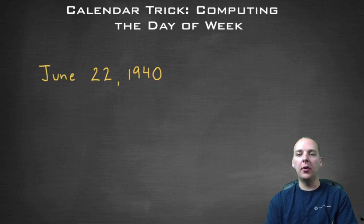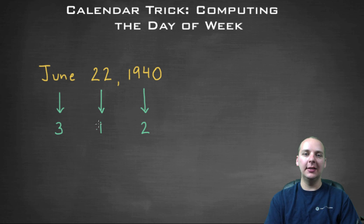The month code for June turns out to be the number three. The day code for the 22nd is the number one. And the most difficult of the three to determine is the year code, which for 1940 is the number two. And we'll explain in our videos how you get the month code, how you get the day codes, and how you get the year codes.